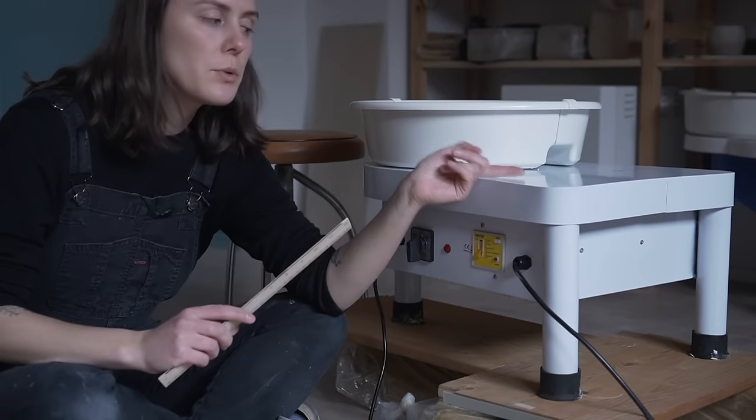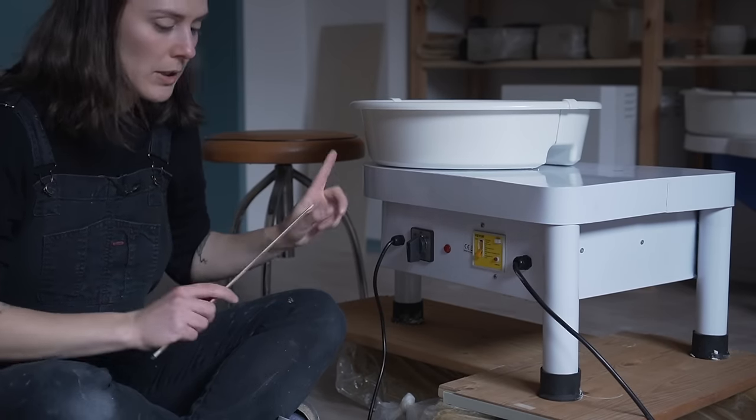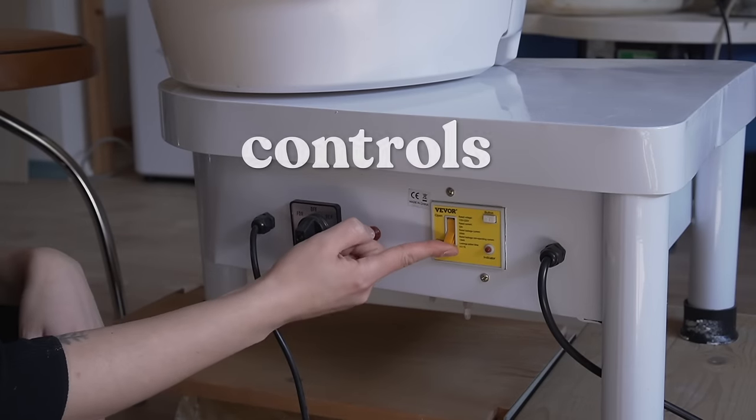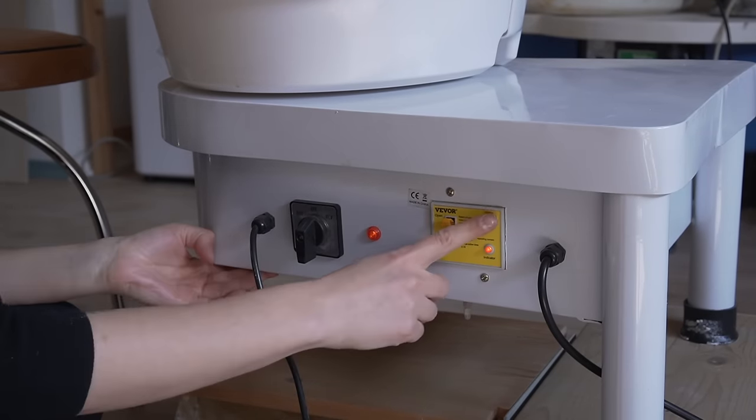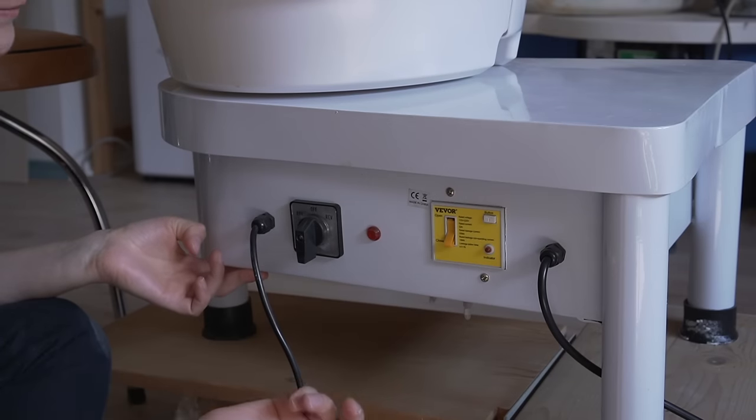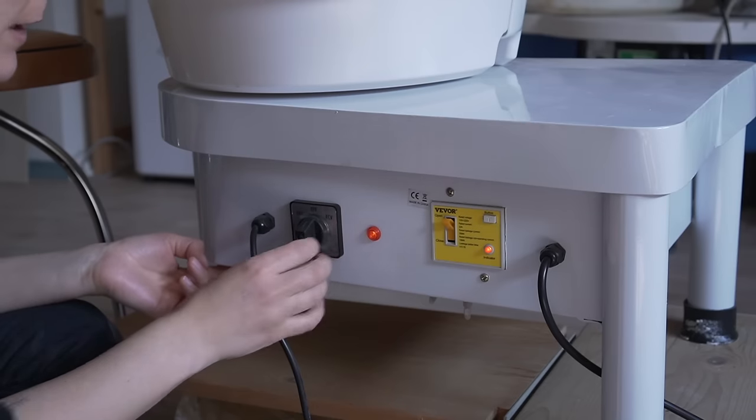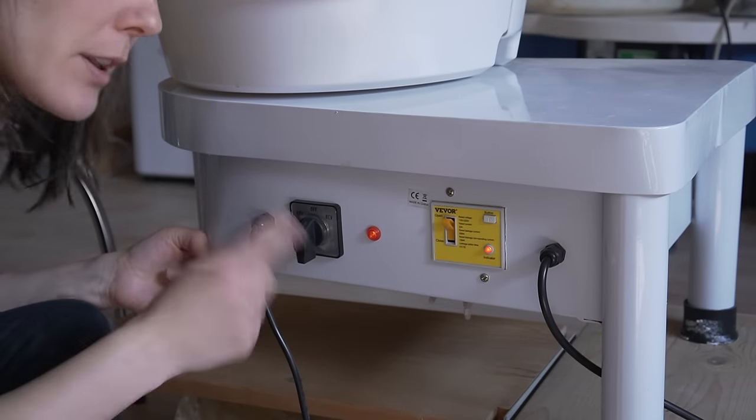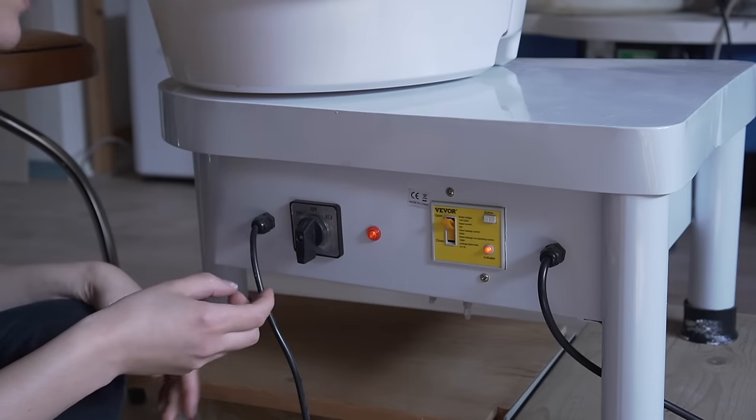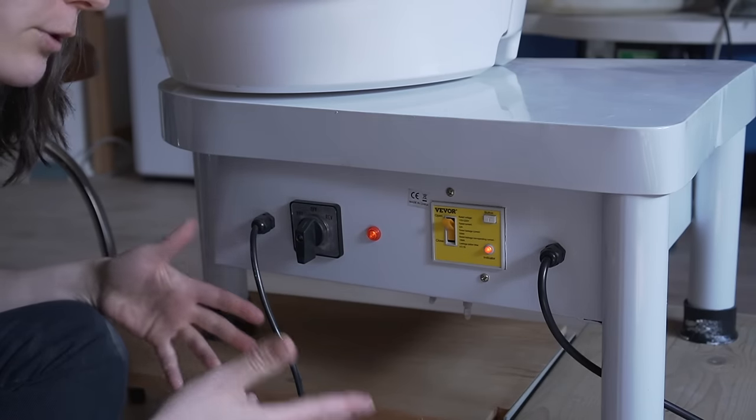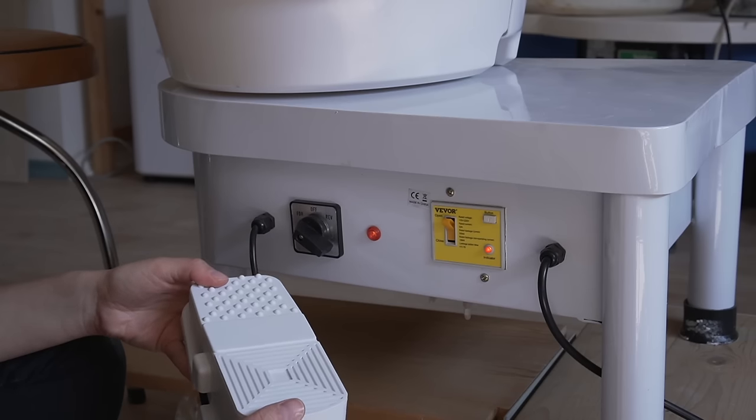You could also use this wheel as a tabletop wheel if you wanted. So let's talk about the controls. I just plugged it in and there's one main switch here and it looks like there's a fuse breaker here. I'm not really sure why that is but it just turns it off. Then besides that, there's just forward and reverse, which is really nice if you're left-handed. You definitely need a wheel that can go both directions because the classic counterclockwise is meant for right-handed people.